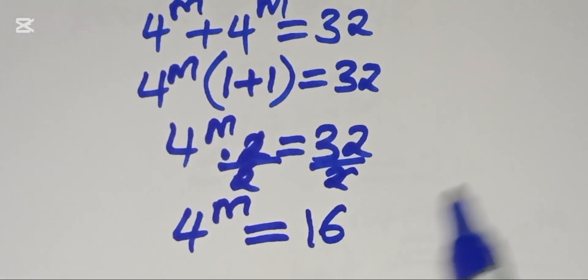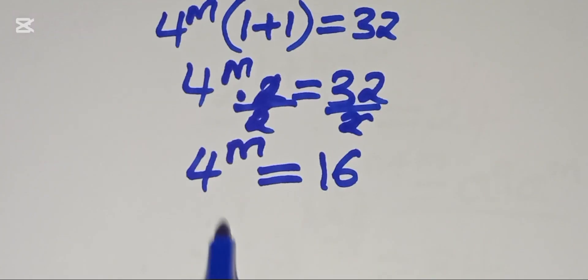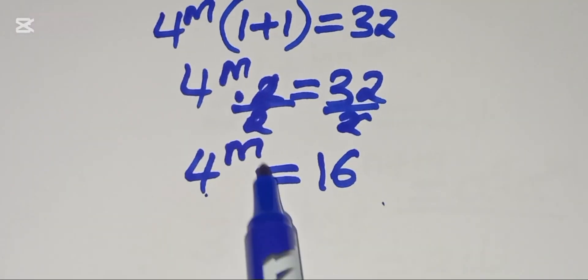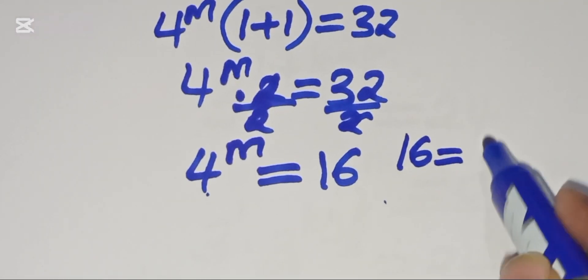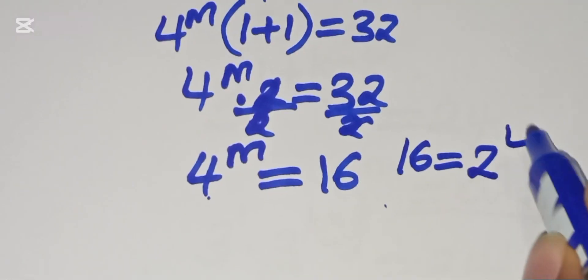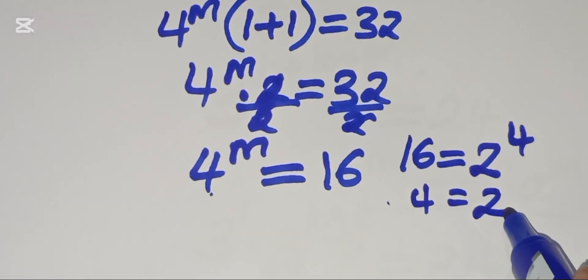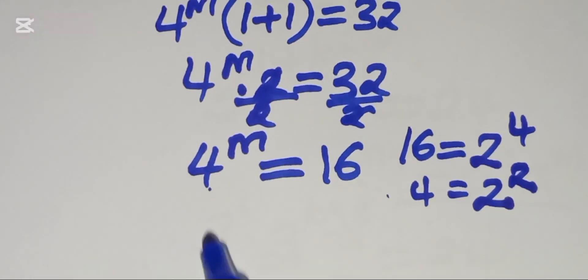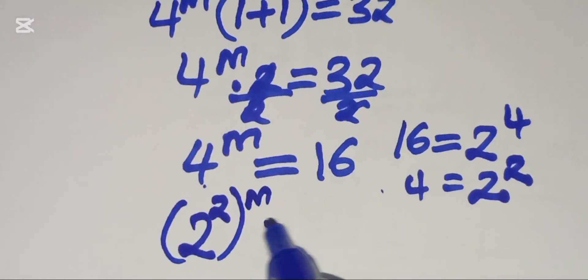We have two methods to solve for the value of m. Method one: we have 4 raised to the power m equal to 16. We can express 16 as 2 raised to the power 4, and 4 can be expressed as 2 raised to the power 2. Substituting, we get 2 raised to the power 2, multiplied by m, equals 2 raised to the power 4.